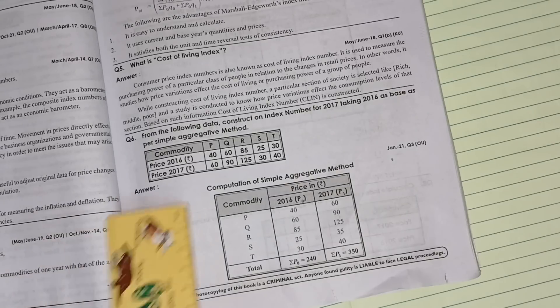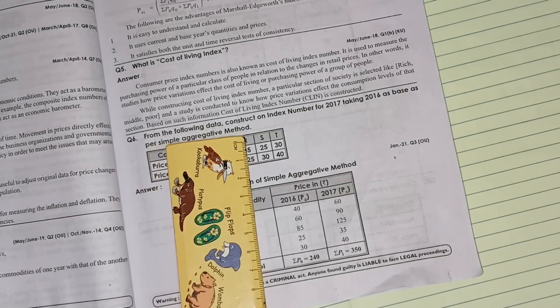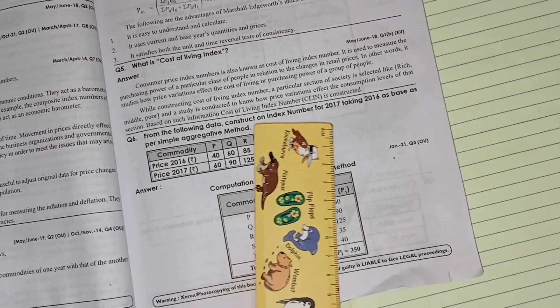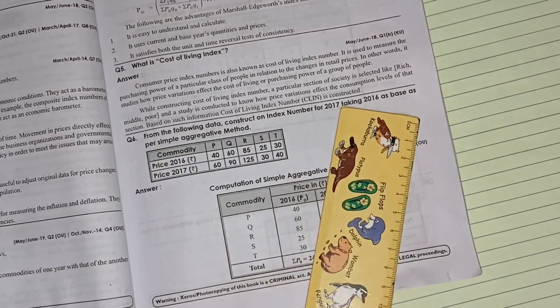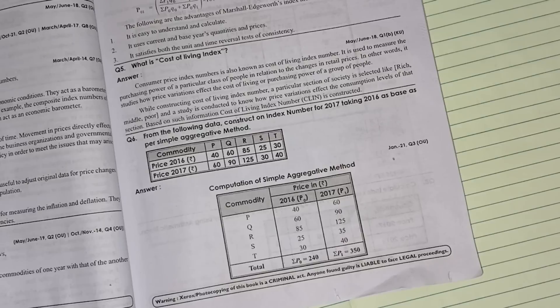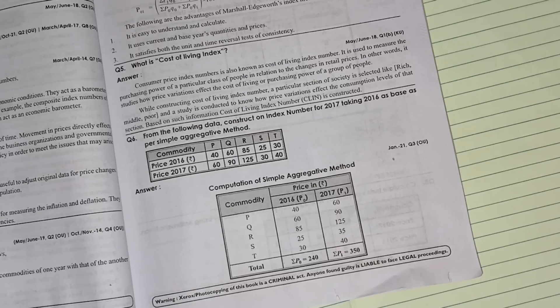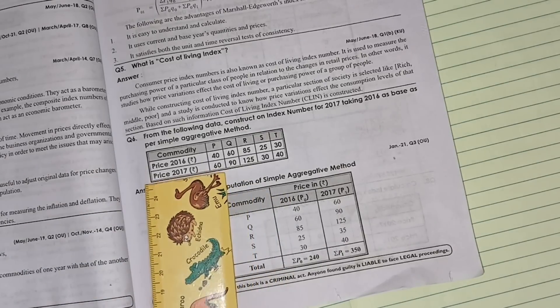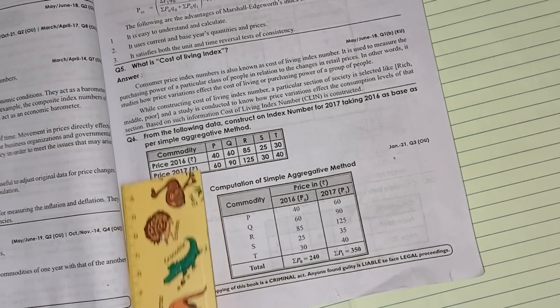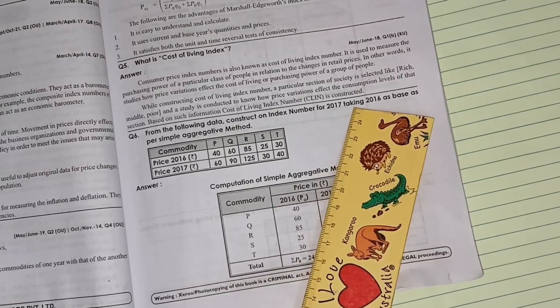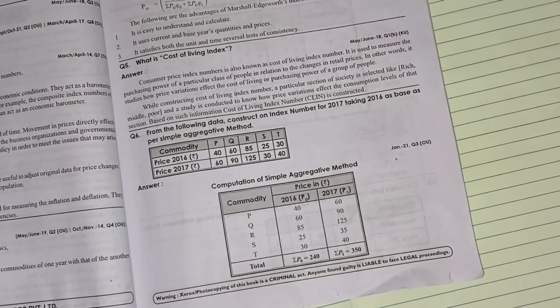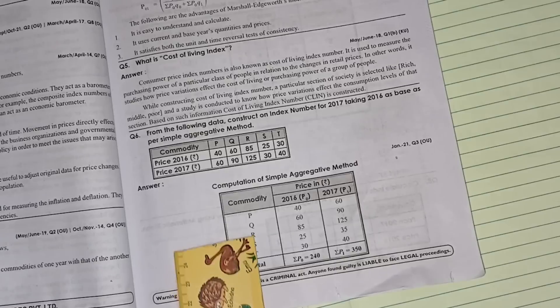Students, in short from unit number 2, they have asked from the following data construct an index number for 2016 and 2017. Base year they have given, so 2017 value they have given, 2016 value also they have given. They are saying that 2016 will be the base year.